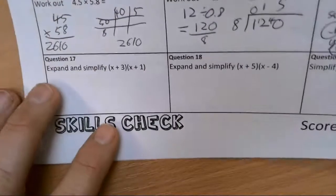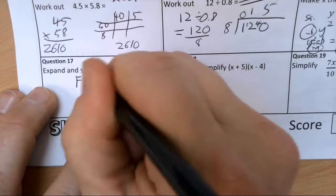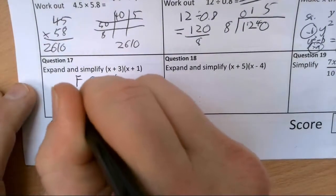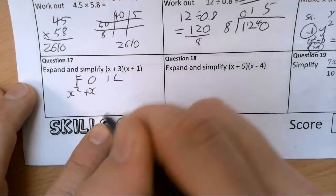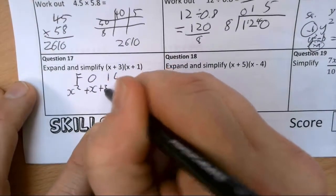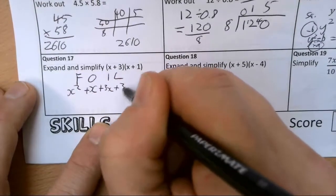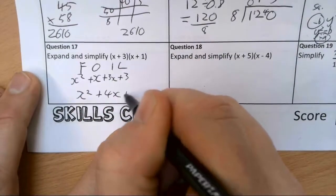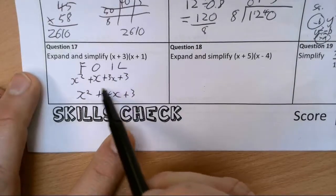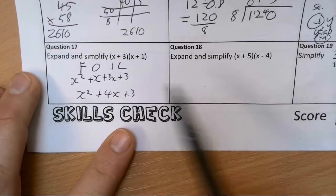Next question, a bit of FOIL. First, outer, inner, last. We've got first x squared, outer plus 1x or just plus x, inner plus 3x, and last plus 3. So let's put those together. x squared plus 4x plus 3. When I say put those together, I mean these like terms can be combined.